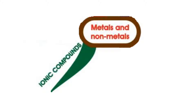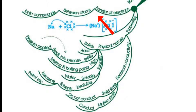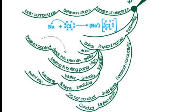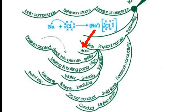The third branch: ionic compounds. Transfer of electrons between atoms forms ionic compounds — for example, NaCl. Properties of ionic compounds: physical nature — ionic compounds are solids and they are hard. Ionic compounds are generally brittle and they can be